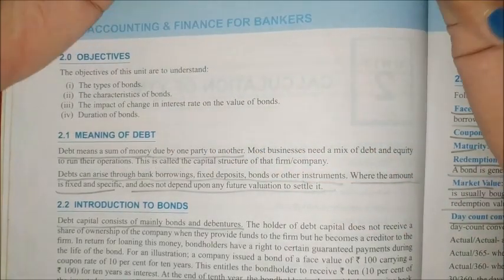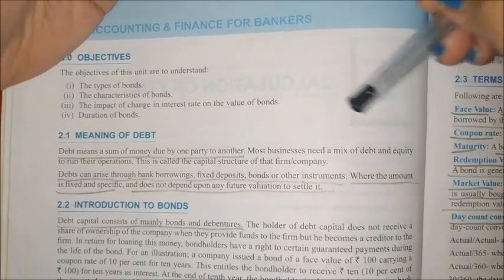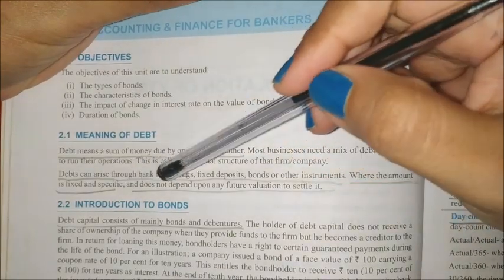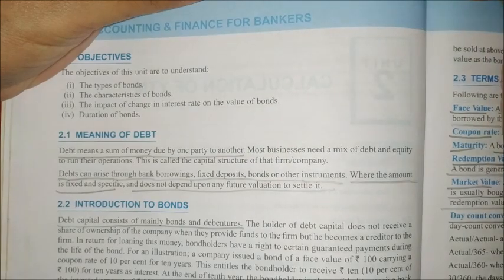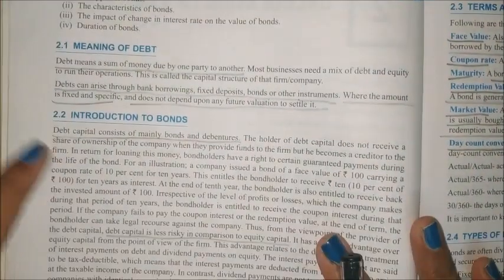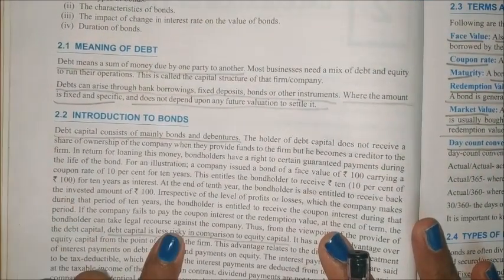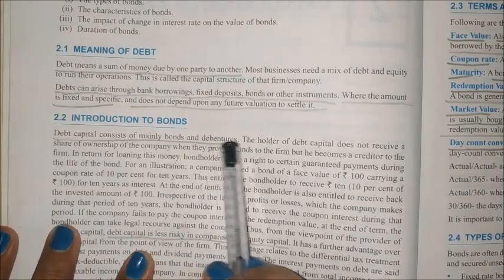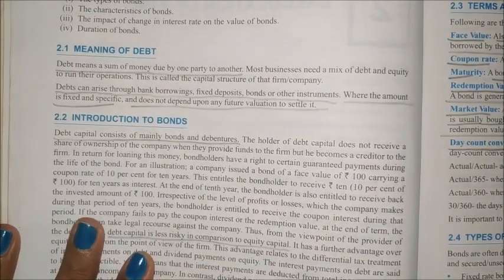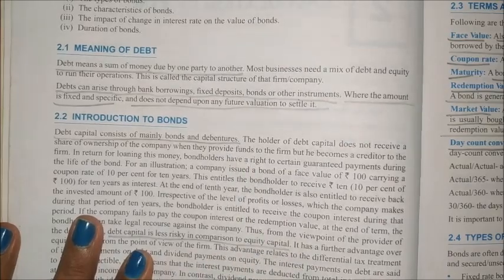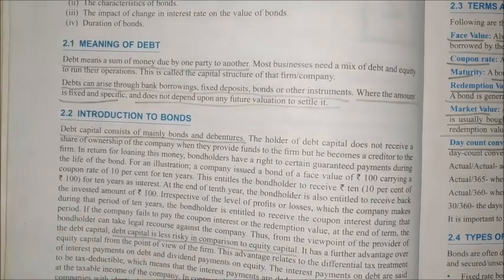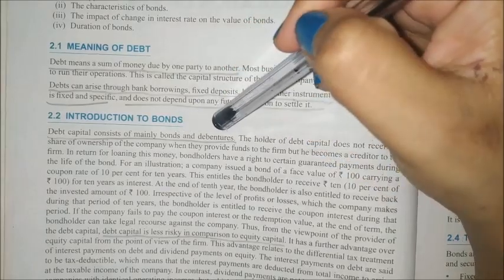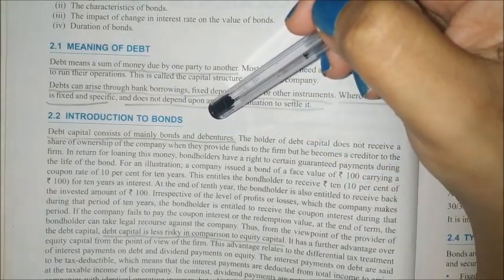We can raise Debt — we need some money — either through a bank or by issuing a bond, when the amount is fixed or specific and doesn't depend on future valuations. In the Debt market, there are mainly two things: bonds and debentures.